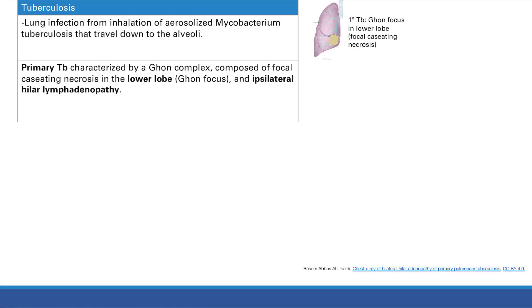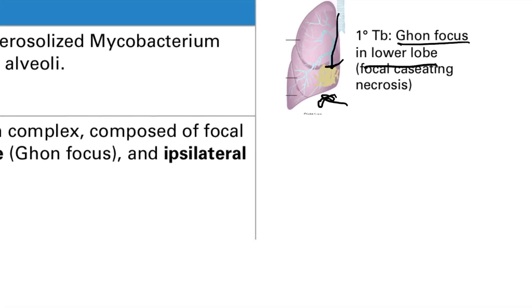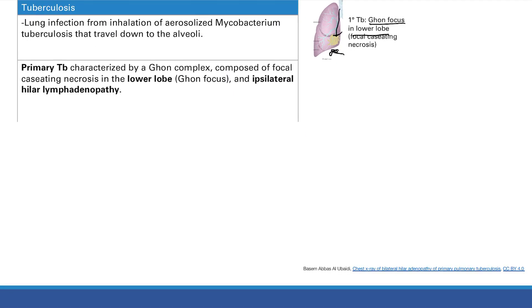In primary TB, the bacteria travels all the way down to the alveoli and settles in the lower lobe, causing a focal caseating necrosis — this is called the Ghon focus. Remember there are different types of necrosis: liquefactive necrosis, coagulative necrosis, and caseating (cheese-like) necrosis. That's what you get in primary TB.